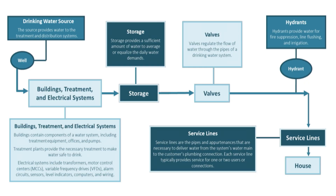I took this from the EPA template model. It gives you a picture of where to start when talking about assets in the field — all the way from the drinking water source to the house where customers receive water. It's not all-inclusive; there are things missing like fences, equipment, and trucks. But it provides a good framework of going from the drinking water source to the tap, so you can see what you're actually responsible for maintaining.